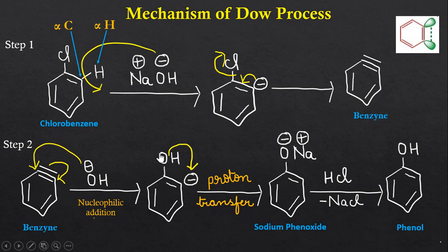We get a carbanion. This carbon has the negative charge, so it acts as a base and extracts the acidic proton. Proton transfer takes place from oxygen to carbon and we get sodium phenoxide. The sodium comes from the base sodium hydroxide. In the last step, acidification occurs with HCl and we get the phenol molecule.